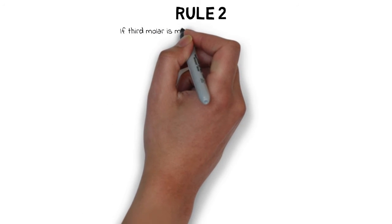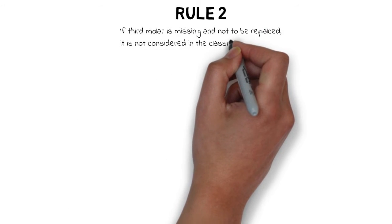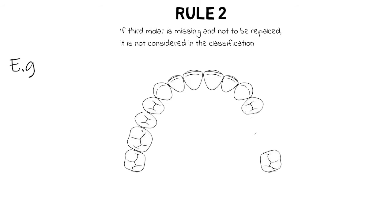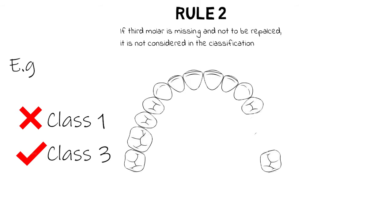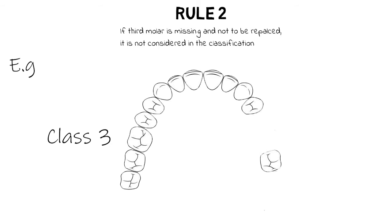Rule 2 states that if the third molar is missing and is not to be replaced, it will not be considered in the classification. For example, if both third molars are missing along with a first molar on one side, we will not classify it as Class 1; we classify it as Class 3 according to the missing first molar. The same applies if the third molar is missing on only one side and there are no intentions of replacing it.